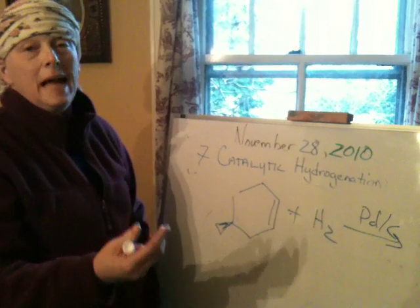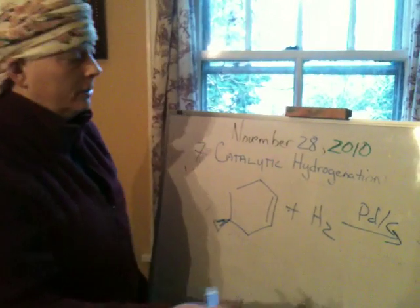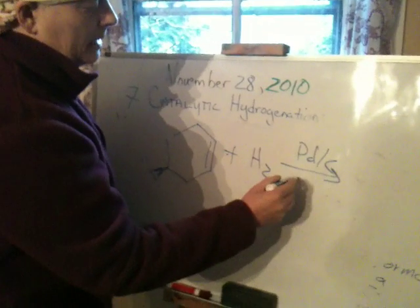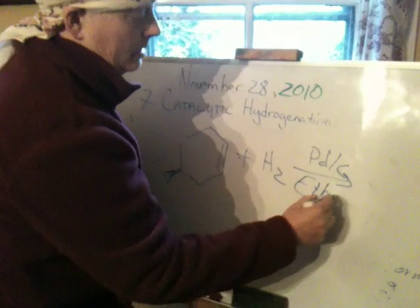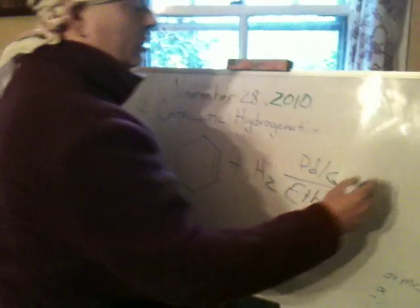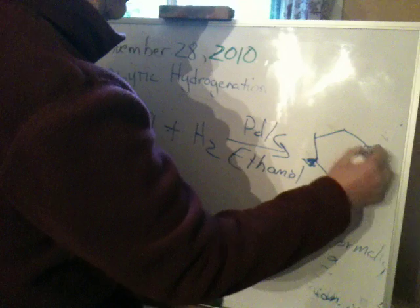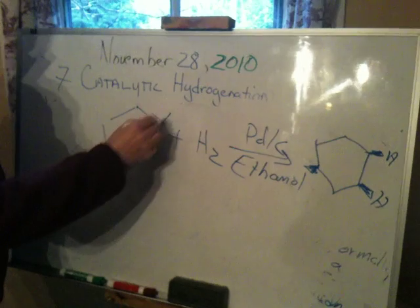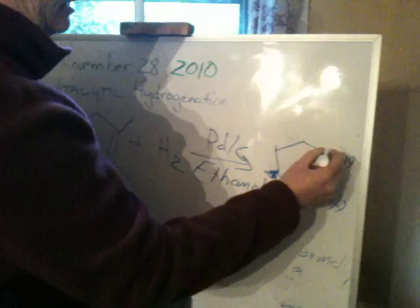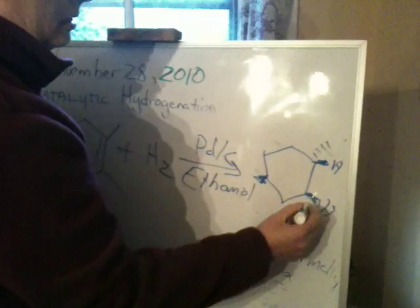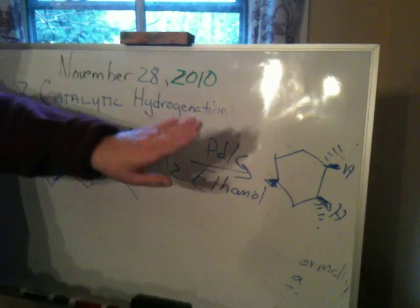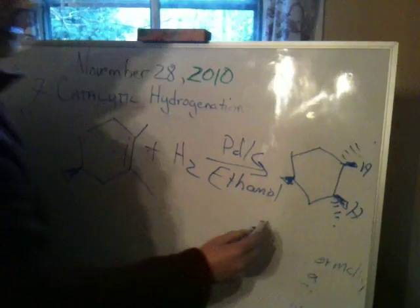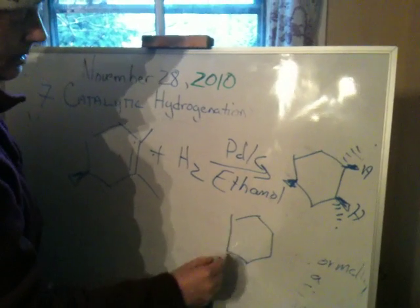Palladium is a transition metal that has been deposited on carbon particles, and it actually just looks like a black dust, sort of like charcoal. You would do this in some kind of solvent, for example ethanol. You have to get something to get this reagent into solution. Then, let's say I put two methyls on here — I want it to have a little stereochemistry. When the two H's come in syn, they're going to push the two methyls down. The other product would look like this.